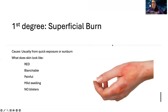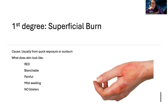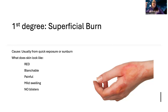First, there's a first degree burn. It's usually from a quick exposure to intense heat, or it can also be like a sunburn. What you'll notice on the skin is it looks red and it's blanchable — meaning when you push down and let go, it returns to its normal color. The skin is also usually painful with mild swelling. A big important thing to note is that with first degree burns, there are no blisters.